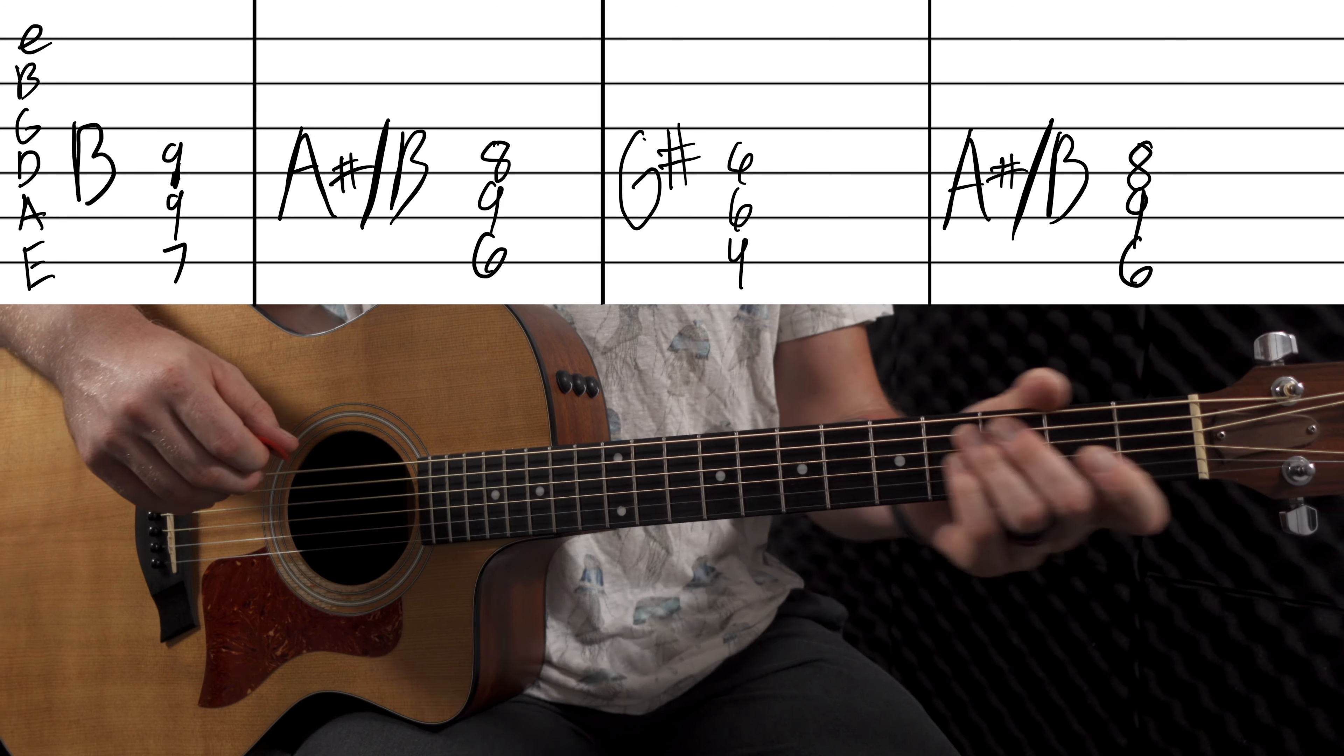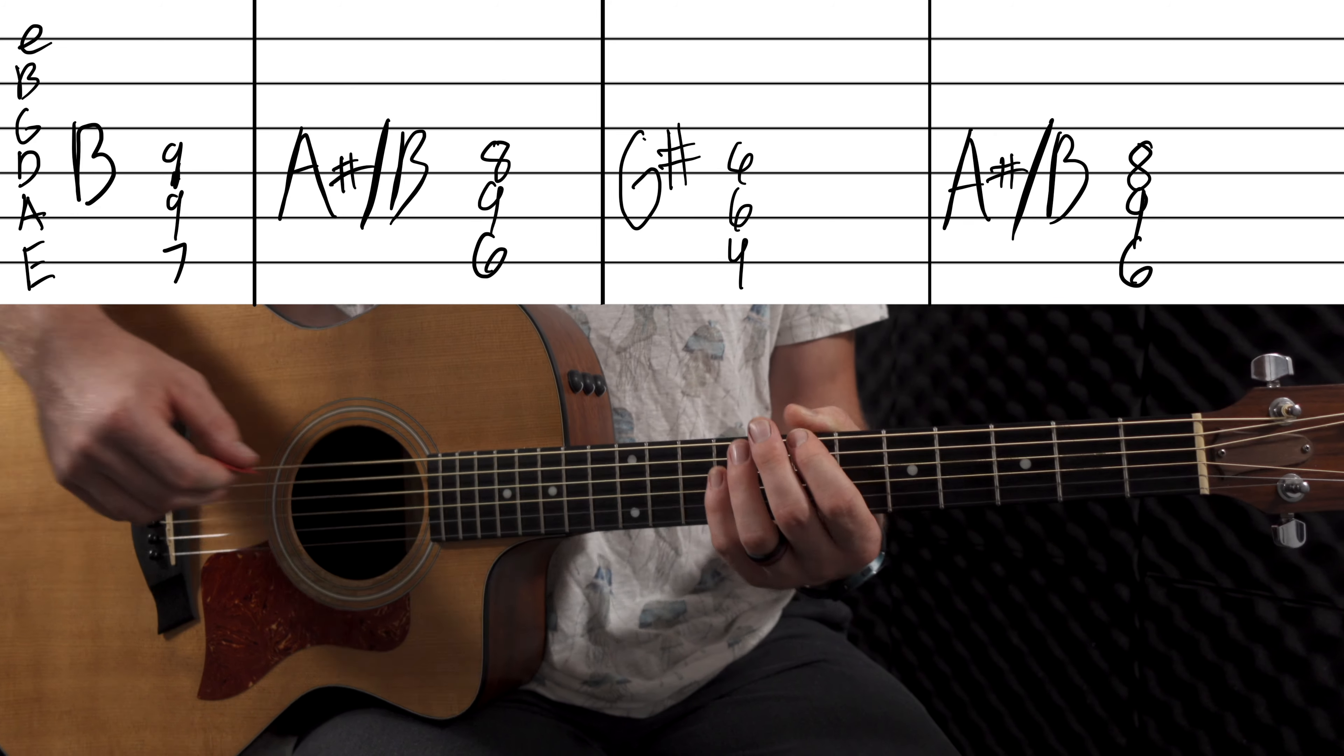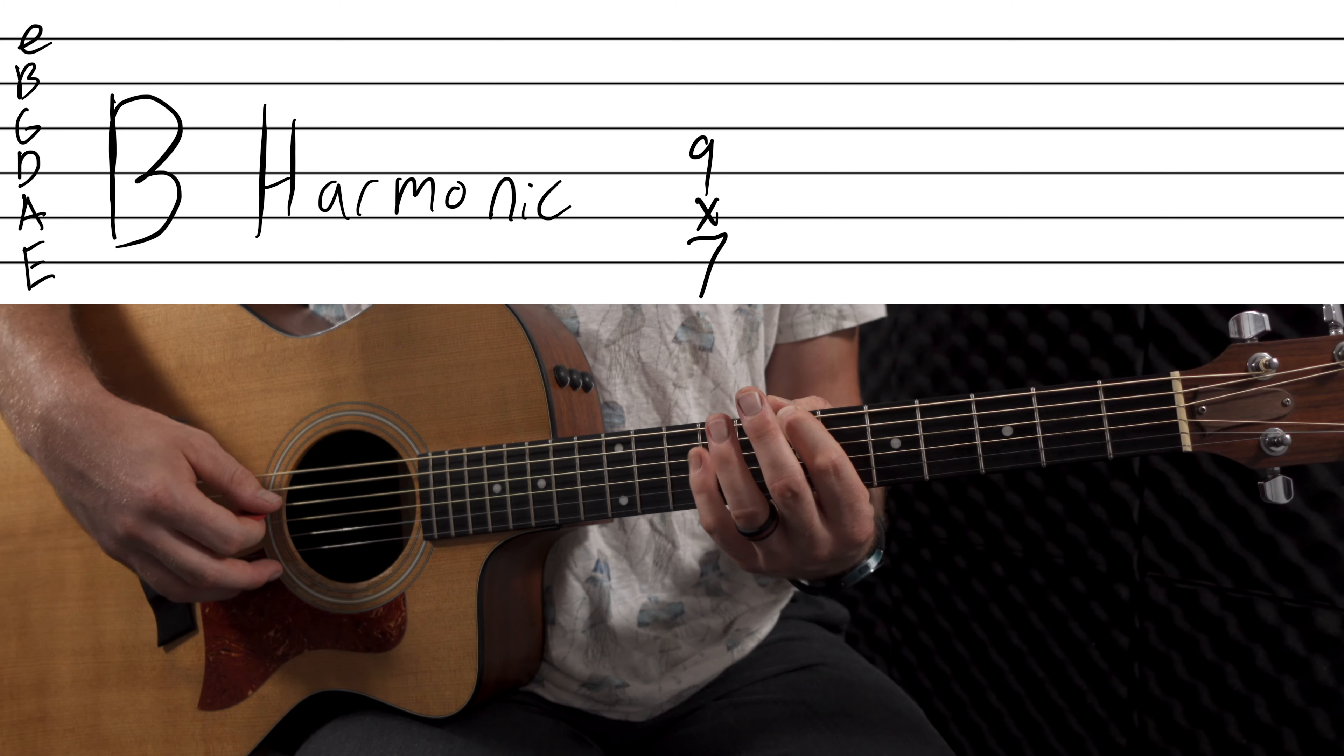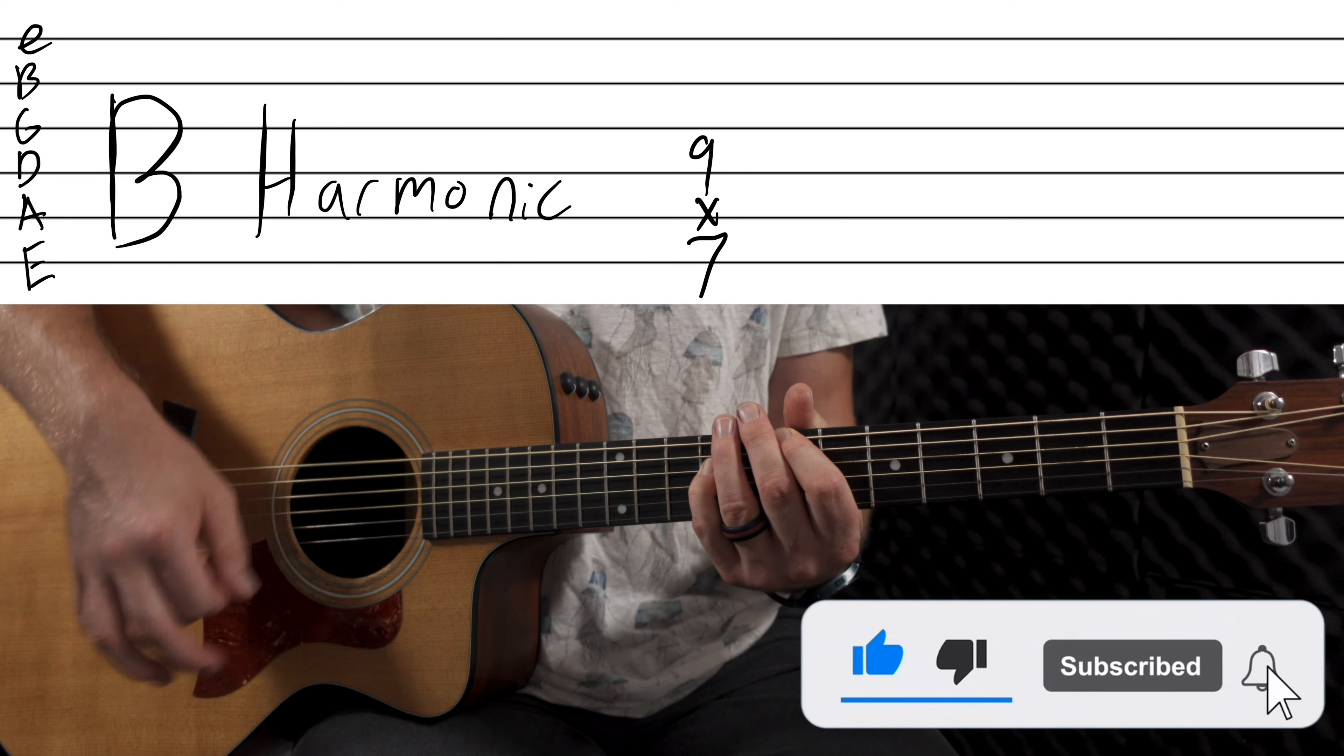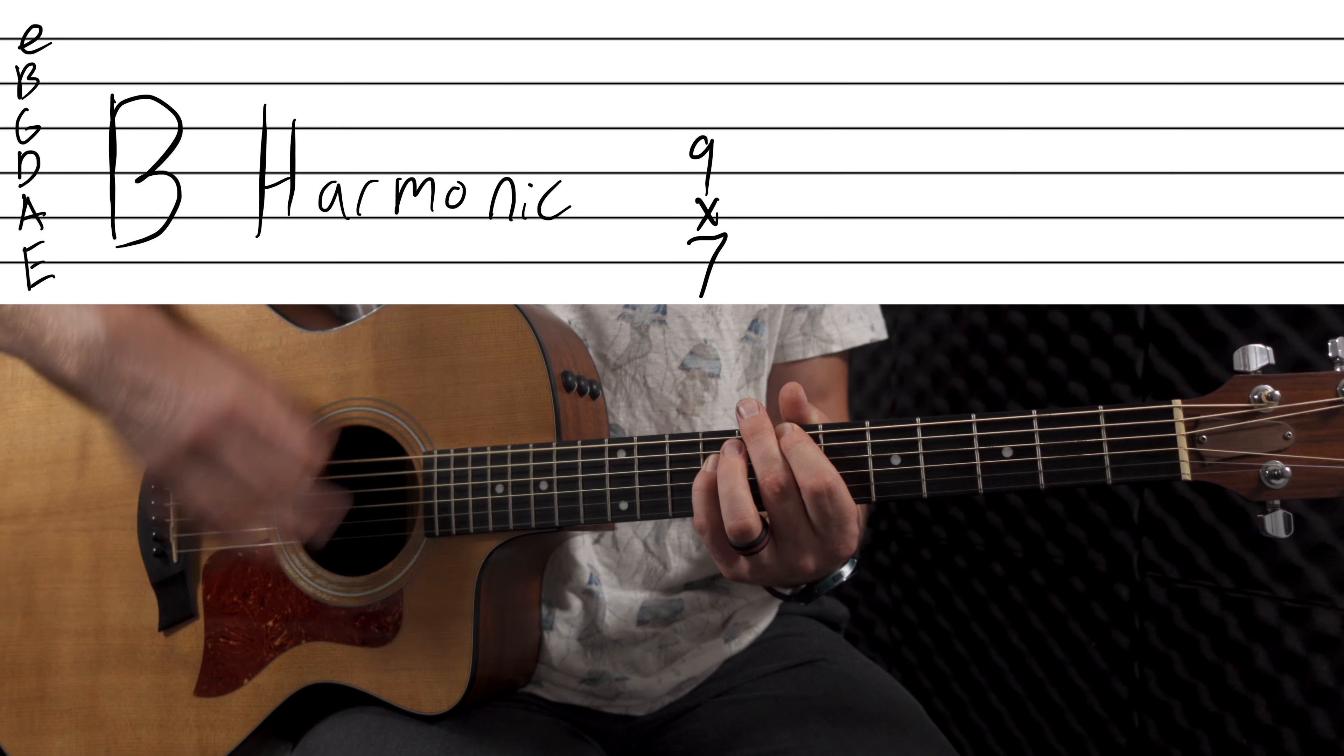Then he starts doing a palm muting of the B, then A sharp, G sharp, A sharp. Then he goes into a pre-chorus, so it's going to be kind of like a harmonics of the B. So how you do a harmonic is it'll be 7th fret of the E string, and then you do 9th fret on the D string, and you try to use this finger to mute out the string. And you know, it goes, where'd you go, I cannot sleep, I've never been this slow, and I'm in too deep.